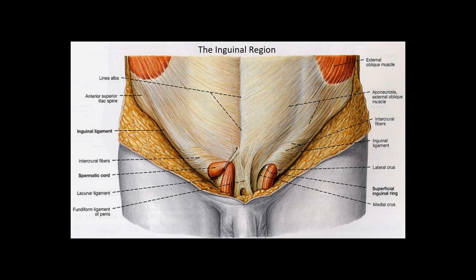The inguinal region describes the place where the abdomen meets the upper thigh. We have an inguinal ligament here, dominated by the aponeurosis of the external abdominal oblique muscle. The muscle fibers give off this aponeurotic flat sheet that fans out to attach to the linea alba, the pubic tubercle, and the anterior superior iliac spine. That fusion creates the inguinal ligament — it's just part of the external abdominal oblique's aponeurosis.